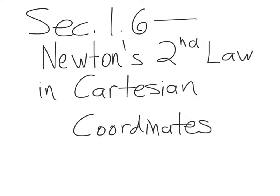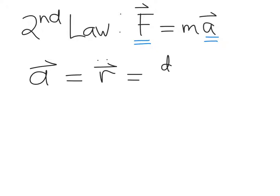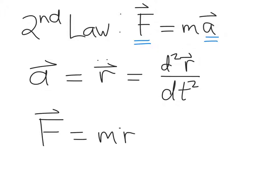In this section, we'll discuss Newton's second law as formulated in Cartesian coordinates. If you recall from section 1.4, Newton's second law is F equals MA — a relationship that tells us how we can relate the force applied to an object to its acceleration. The acceleration vector is the second time derivative of the position vector R, so Newton's second law is equivalent to F equals M times R double dot.